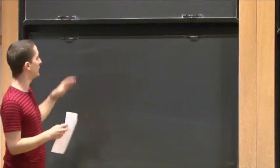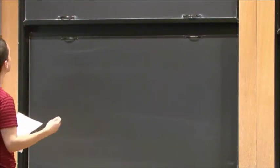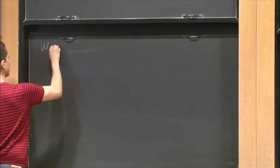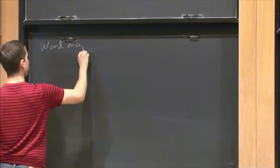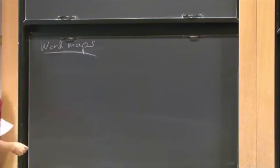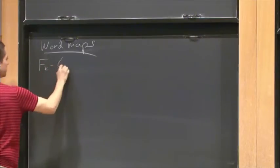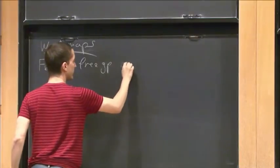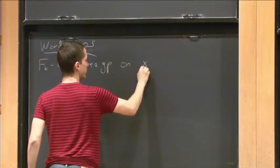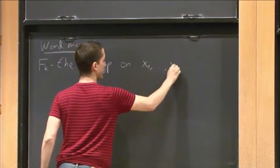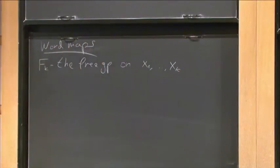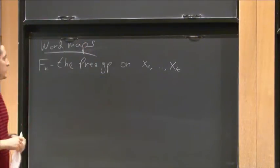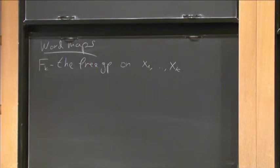Let me start with a short introduction to word maps. So we look at Fk, which is the free group on k letters, on k generators. Let's denote them by x1 to xk. The elements are just the reduced words in x1 to xk and their inverses. These are the elements of the free group.